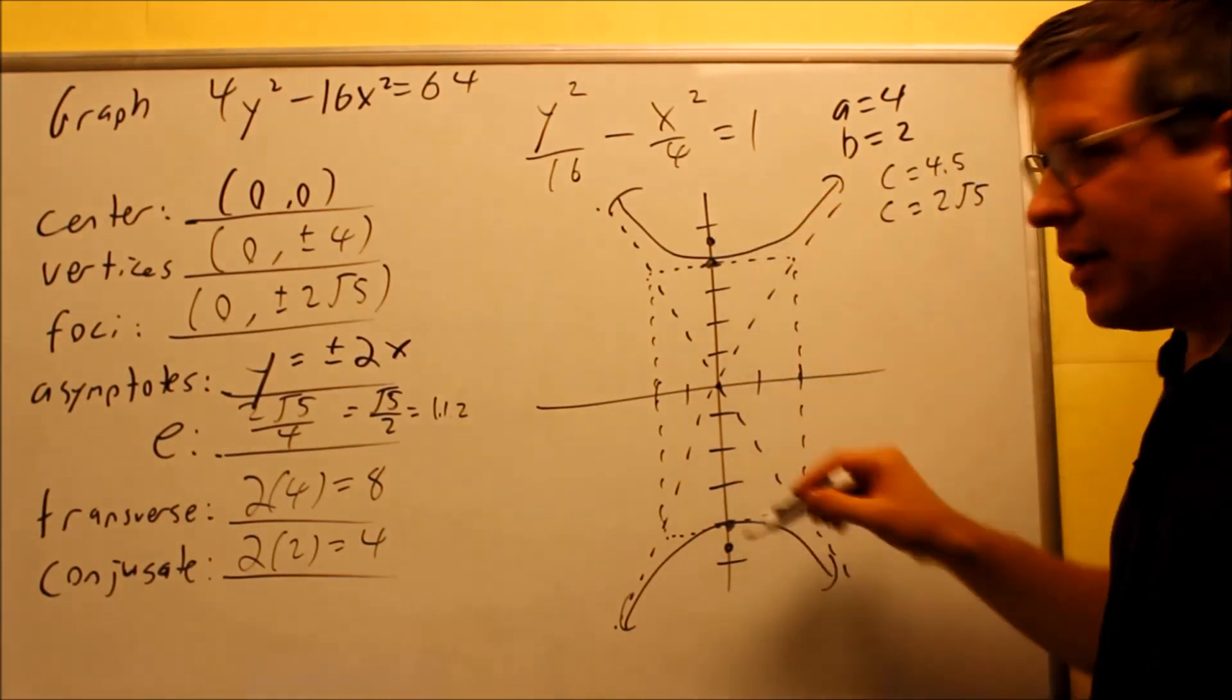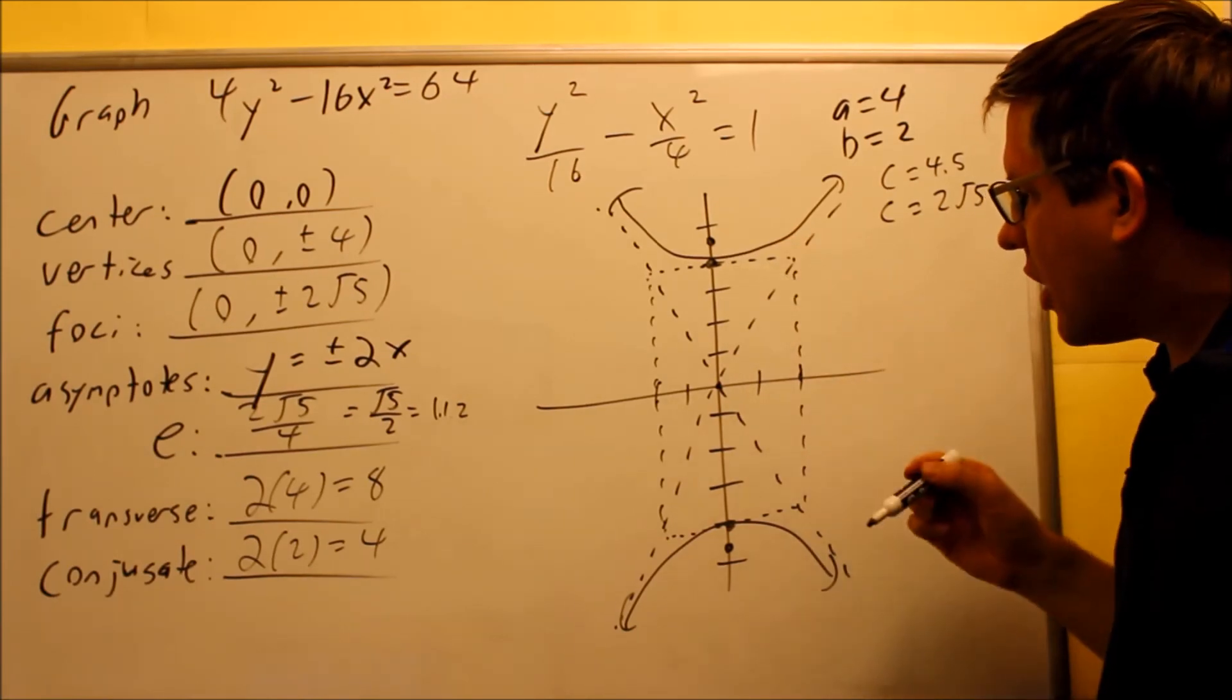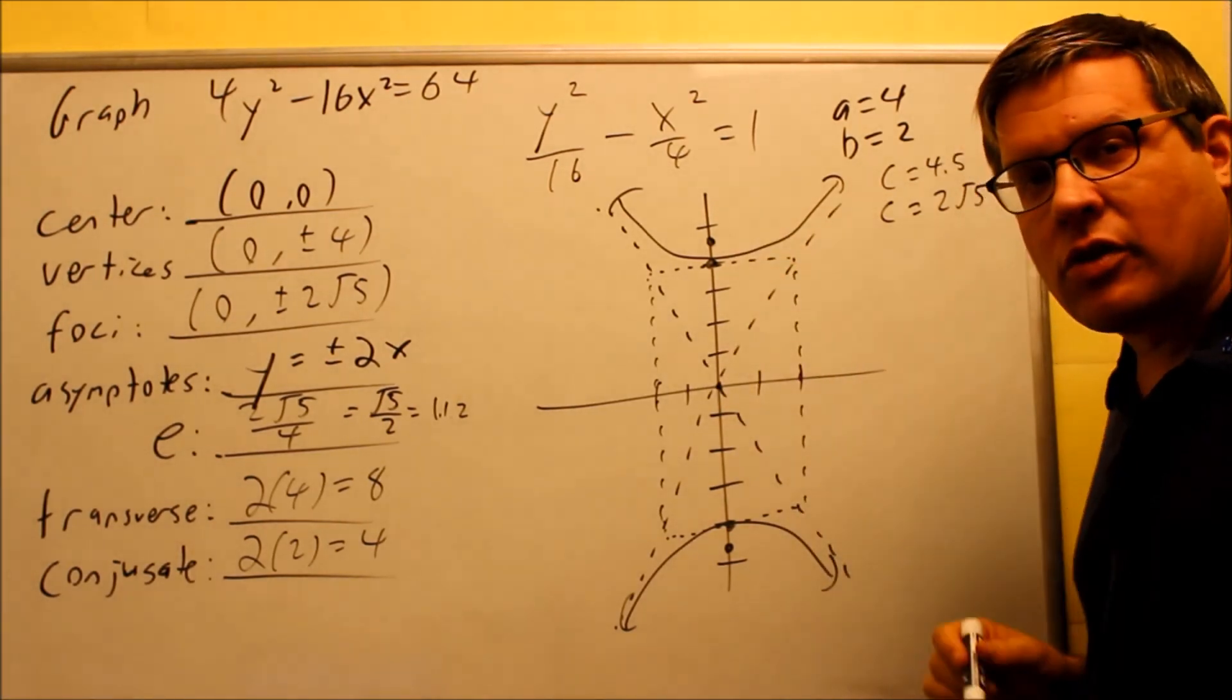But that would be your final graph. So we have foci labeled on the graph. We have vertices on there. We have our asymptotes. Everything is complete.